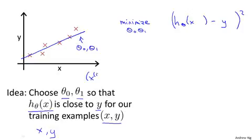So let's fill in some details. Remember that I was using the notation xi comma yi to represent the i-th training example. So what I want really is to sum over my training set, sum from i equals 1 to m, of the squared difference between the predicted price of the house and the price that it was actually sold for. And I want to minimize the sum over my training set, sum from i equals 1 through m, of the squared error, squared difference between the predicted price of the house and the price that it was actually sold for.